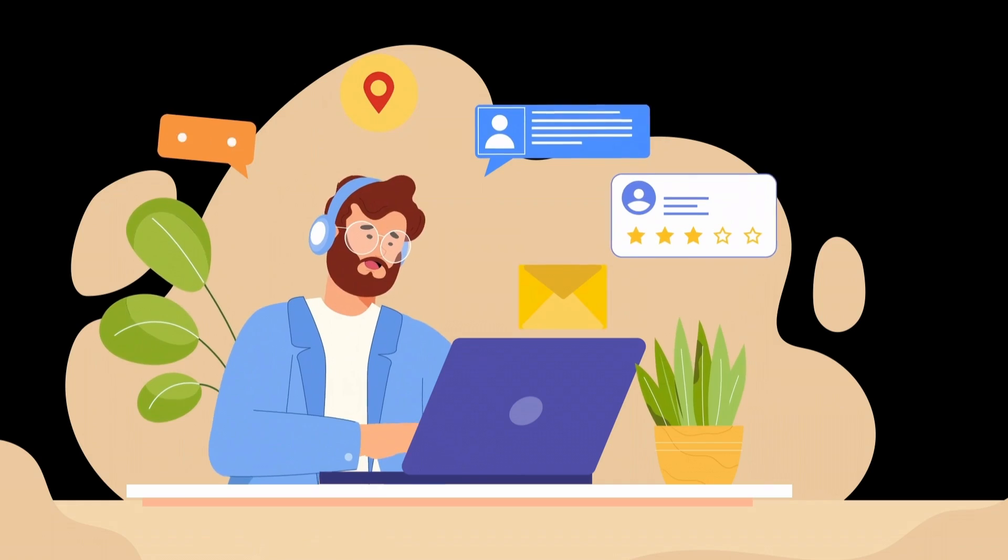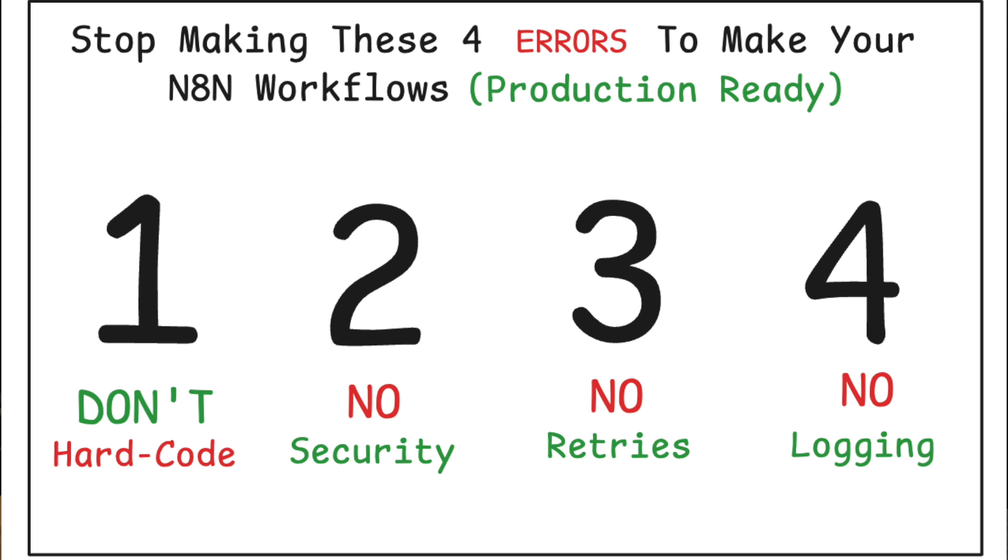Most n8n learners grind away building workflows but never know if they're any good. That's where feedback loops come into play. Without feedback, you can be consistent all you want, but if you're building inefficient workflows, all that effort means nothing. I see this constantly — people who've been using n8n for months, but their workflows are slow, unreadable, and break constantly, so they're not production-ready. They've been practicing wrong for hundreds of hours, mastering the art of building bad automation.